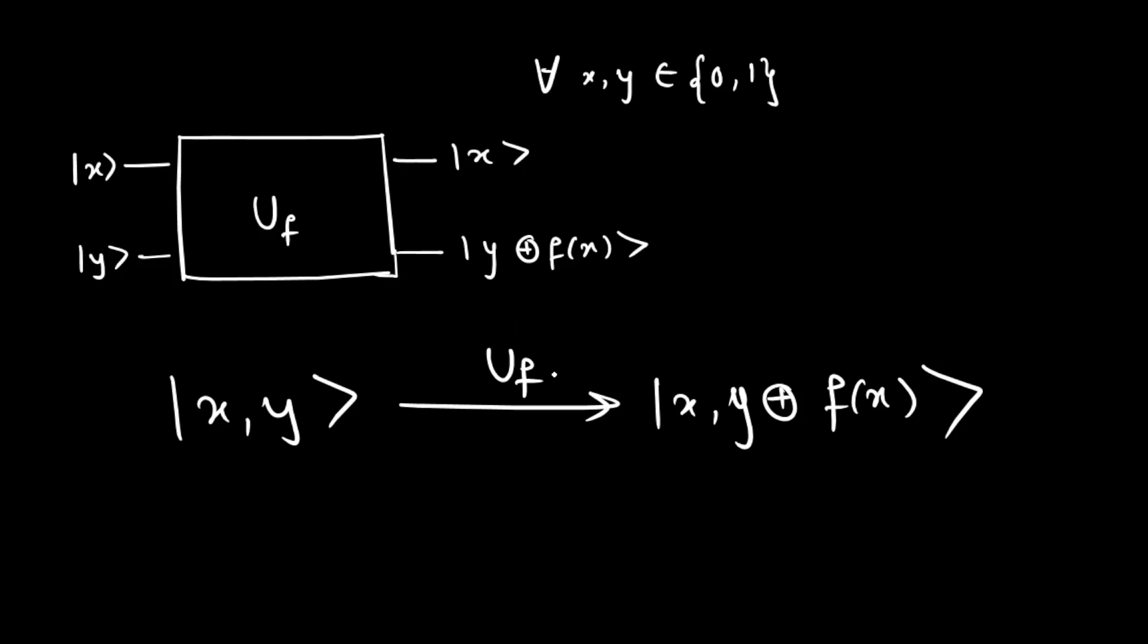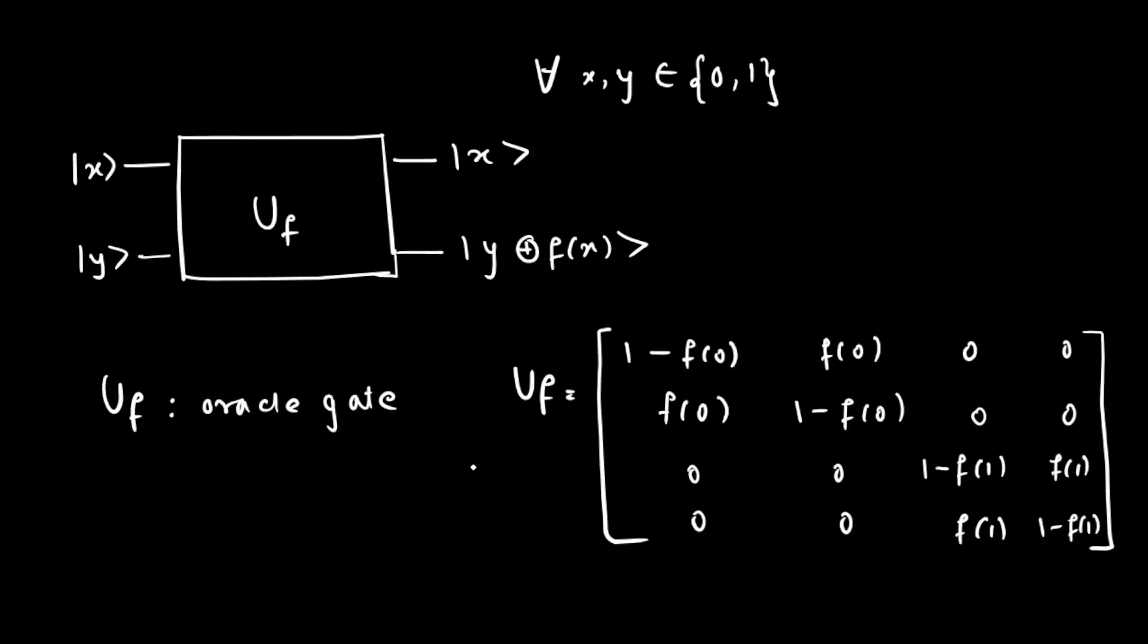This transformation U is realized using this diagram. Here U_f is called oracle gate and is given by this unitary matrix. Now let's see a quantum circuit for evaluating f(0) and f(1) simultaneously with the help of this transformation.